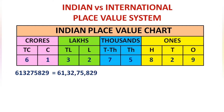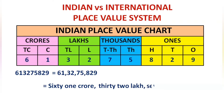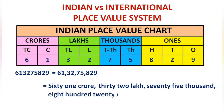Now let us name the number. As 61 is in the crores period, it is 61 crore. 32 is in the lakhs period, so 32 lakh. 75 is in the thousands period, so it is 75,000. Finally, 829 is in the ones period, so simply 829.